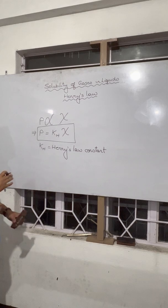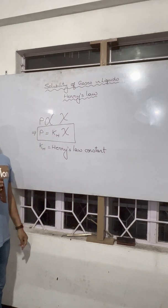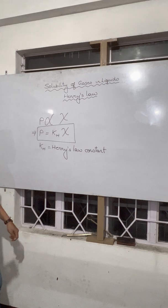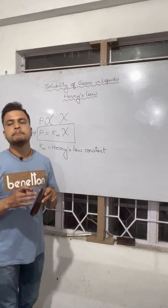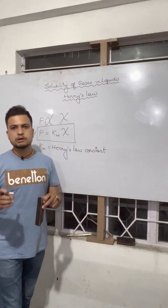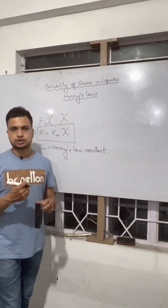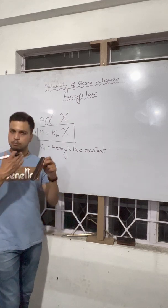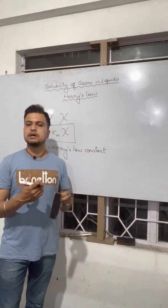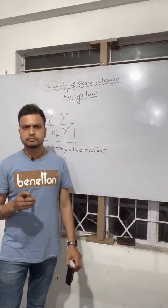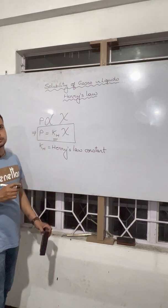Once we understand Henry's law constant, and that pressure is directly proportional to chi — the solubility of a gas in a liquid depends on two variables. One is pressure: more the pressure of the gas, more is the solubility, more is the mole fraction. The second variable is temperature. To understand that, we will try to interpret KH.